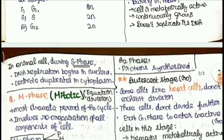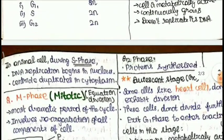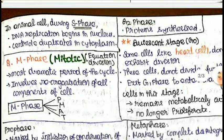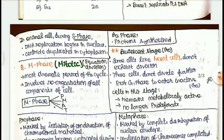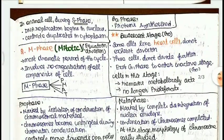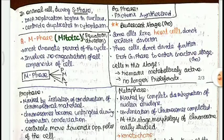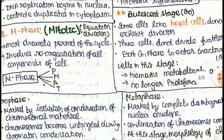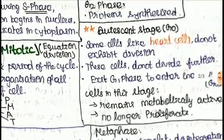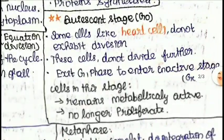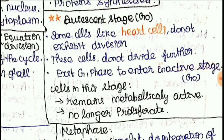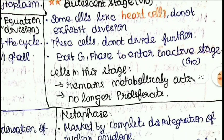G2 phase is simple — protein synthesis occurs during G2 phase. In the quiescent stage, known as G0 phase, some cells like heart cells do not exhibit division. These are all must-to-remember points.